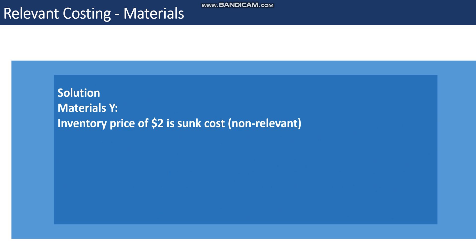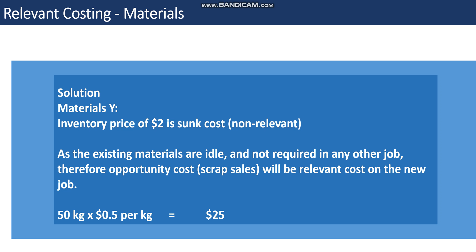For Material Y: the inventory price of two dollars is sunk. Since the existing materials are idle and not required in any other job, the opportunity cost is the sale or scrap value. So 50 kilograms times $0.50 gives a relevant cost of $25. You need to think about how the cost of material is affected as a result of the decision.